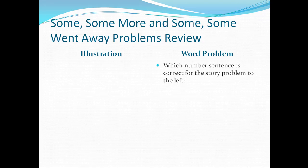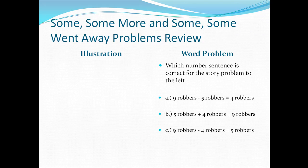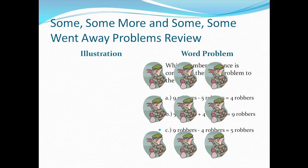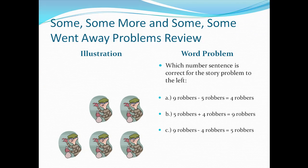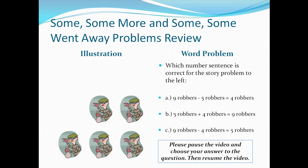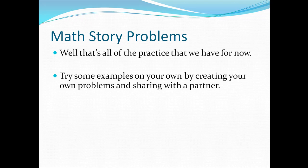And one more problem for review. Is the answer going to be A: Nine robbers minus five robbers equals four robbers. B: Five robbers plus four robbers equals nine robbers. Or C: Nine robbers minus four robbers equals five robbers. Watch both parts, then pause your video and make your answer choice. The correct answer is answer C: Nine robbers minus four robbers equals five robbers. That's all the practice we have for now. I would like to encourage you to try some examples on your own by creating your own problems and sharing them with a partner. Thanks for watching.